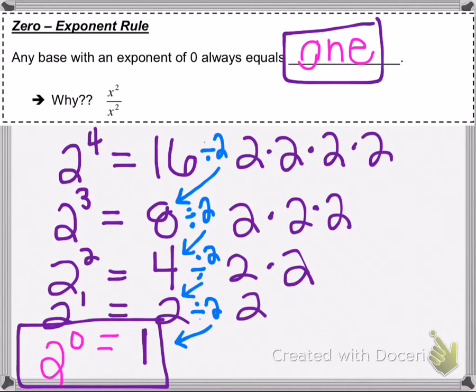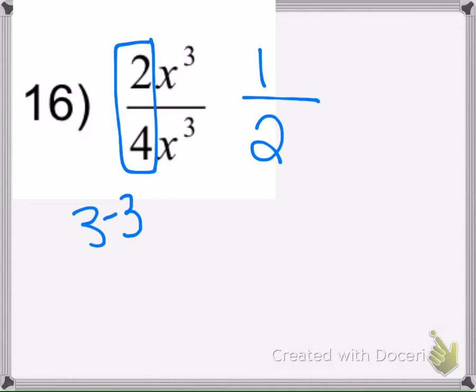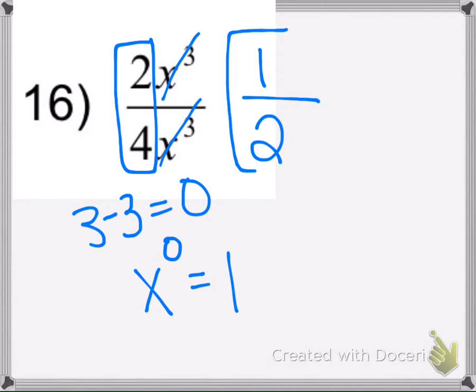Alright, let's do some examples here. Remember, as you get comfortable, pause the video and try them yourselves. So here we have 2 fourths, that's a half, and then 3 minus 3 is 0, and anything to the zero power is 1. So they cancel out and make 1.